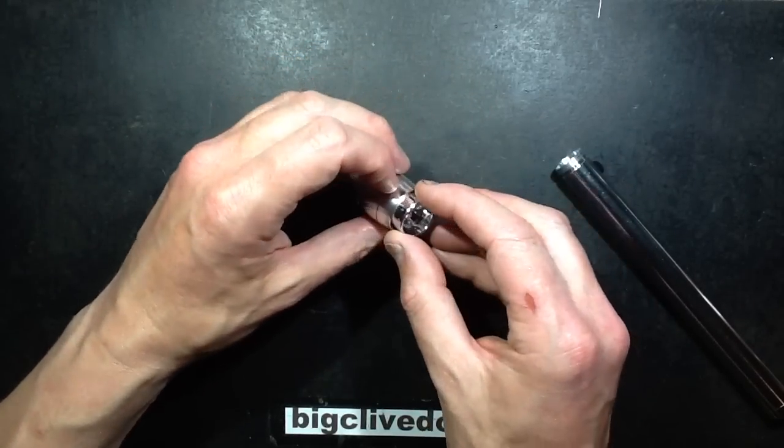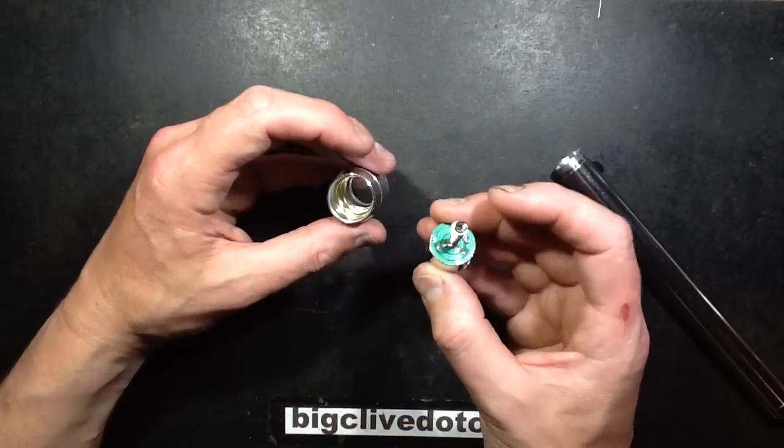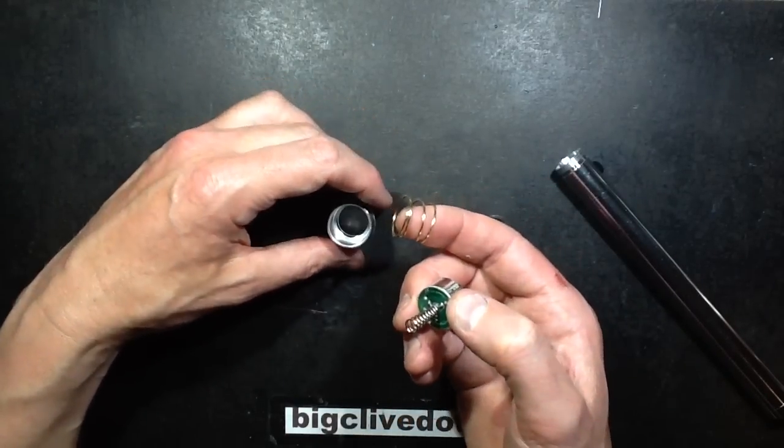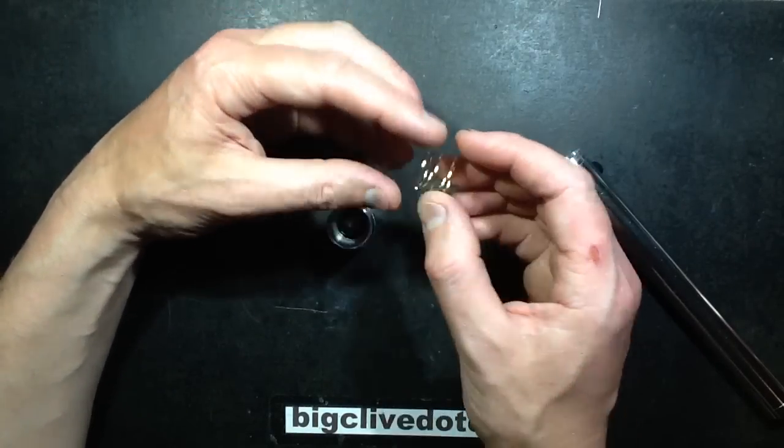However, once you've got it out, the circuit board with a spring for the positive connection comes out. Then to make the negative connection onto the body, there's this gold-colored spring which sticks to a magnet, so it's obviously a treated steel in some way.